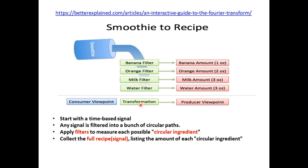The type of filter you apply to get a transformed signal in frequency domain is called a frequency transformation. Any signal is filtered into a bunch of circular parts. We tend to think of signals as one-dimensional sine waves, but in reality it is not so. The information is not just represented in terms of one-dimensional sinusoidal waves — each frequency component is represented in terms of a circular or circular representation. You will be able to collect the full recipe, that is, the full signal information, with each circular ingredient representing each frequency component.